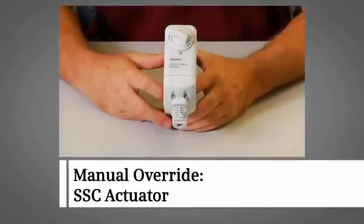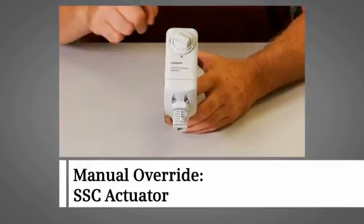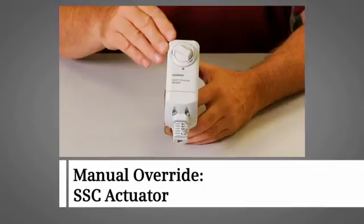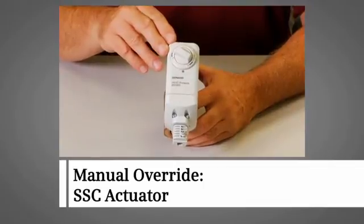For the SSC actuator, the manual override allows us to manually open or close the valve as needed when power or a control signal is not present.